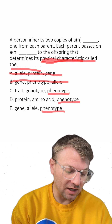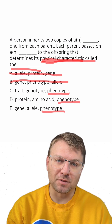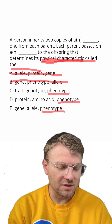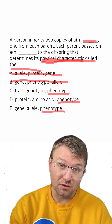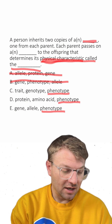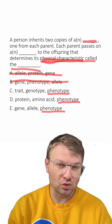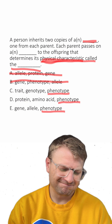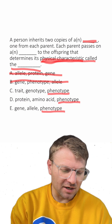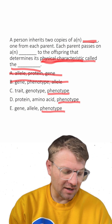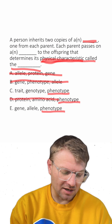So B is wrong and A is wrong. Let's reread the first part together: a person inherits two copies of a blank. Looking through our answers: a person inherits two copies of a trait — not bad. A person inherits two copies of a protein — that doesn't sound right.